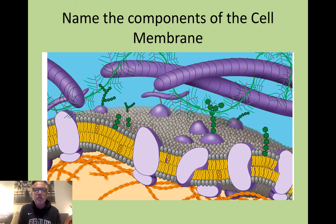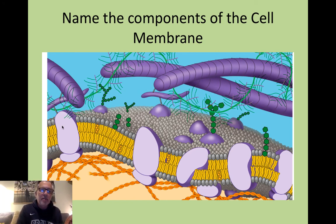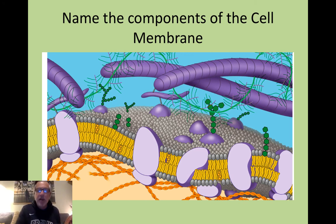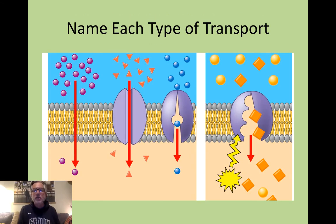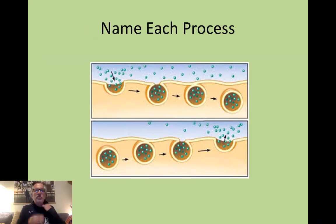Finally, I have a quiz for you. Here is a diagram — identify as many components as you can, including the purple objects, the yellow objects, the orange objects in the cell membrane, and the orange objects elsewhere. Stop the video and see if you can do that. Next, identify the type of transport shown in each of four diagram cases. And lastly, name each process and describe what is happening in each case.